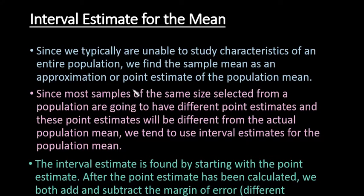Typically in the real world, when we are studying a certain characteristic of a population, we are unable to study the entire population. So what we often do is find the sample mean as an approximation or point estimate of the population mean.